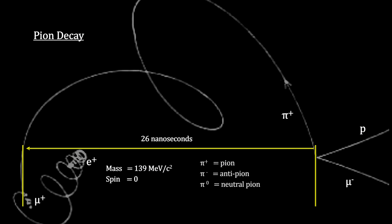Pions came in three flavors, one with a positive charge, one with a negative charge, called the anti-pion, and one with no charge at all.